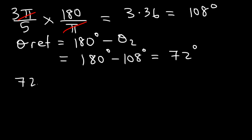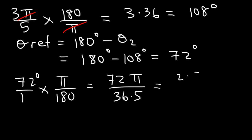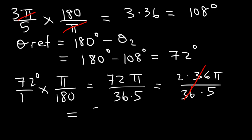Now let's convert 72 degrees back into radians by multiplying by π/180. We know 180 is 36 times 5, and 72 is 2 times 36, so we can cancel the 36. Therefore 72 degrees equals 2π/5, and that is the reference angle.